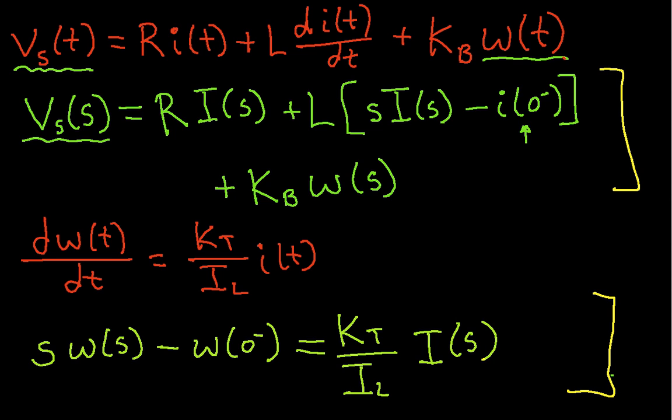Again, I'm using the unilateral Laplace transform because at some point I'm going to want to do things that involve initial conditions. But hopefully you'll remember that the transfer function is basically the ratio of the output, or the Laplace transform of the output to the Laplace transform of the input, assuming that all the initial conditions are zero. So, for the purpose of computing the transfer function, I'm going to assume that the initial current is zero and the initial omega is zero.